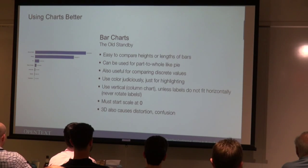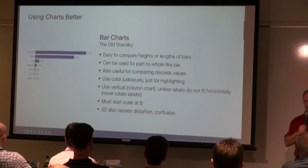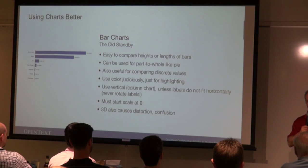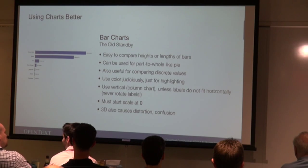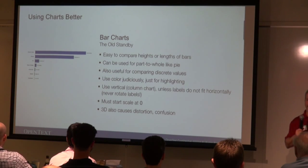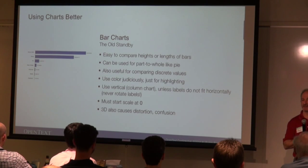Never rotate labels. Our eyes can't read it. If you have to rotate labels at a 45 or 90 degree angle, flip the chart instead. Bar charts must start at zero. And never, ever use 3D on any chart.